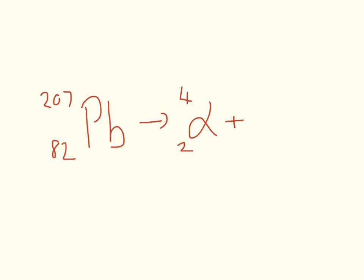Next one: 207 minus 4 equals 203. And then 82 minus 2 makes 80. 80 is the number we need to look up on our periodic table. And it is mercury.